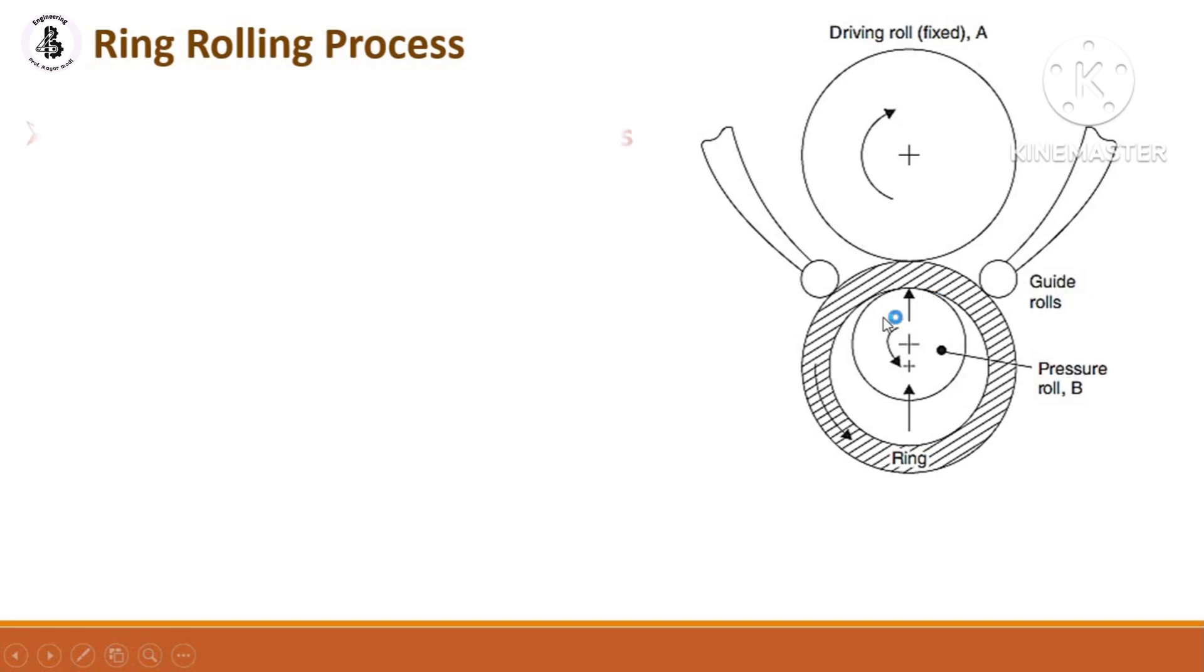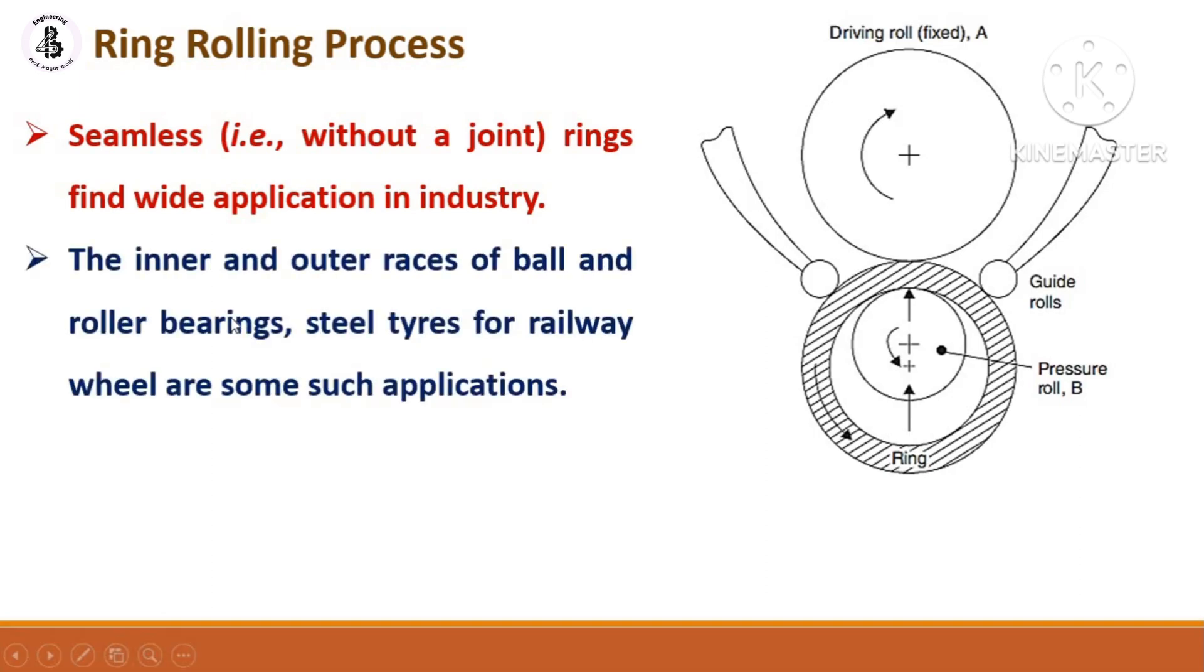This ring rolling process will be used for seamless rings with different applications in the industries. Without any kind of joint, you will manufacture this ring or metallic ring. The inner and outer race of ball and rolling bearings, and steel tires for railway wheels are some of the applications of the ring rolling process.